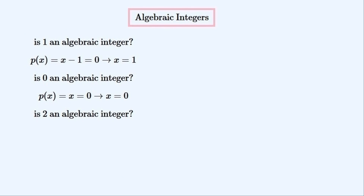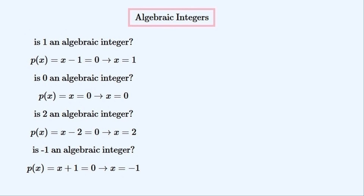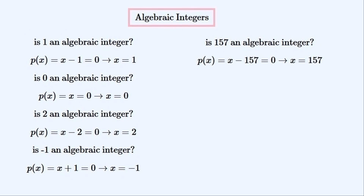You can probably guess that 2 is an algebraic integer, because x minus 2 is the smallest monic polynomial that it is a root of. Minus 1 should be an algebraic integer, because its corresponding monic polynomial is x plus 1. You should see a pattern emerging that any integer is an algebraic integer, and that the corresponding monic polynomial should be x minus this integer.